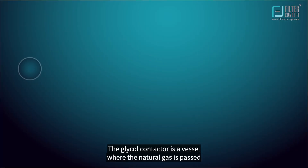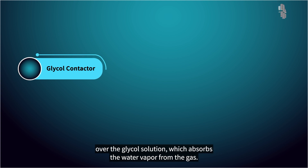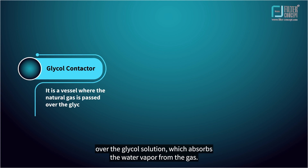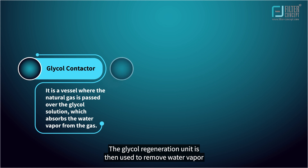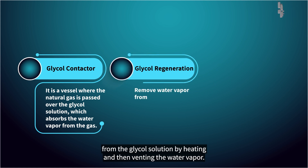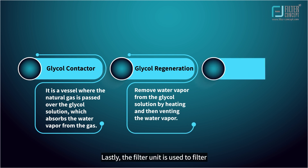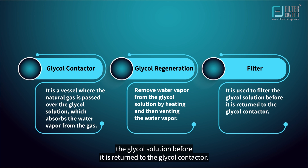The glycol contactor is a vessel where the natural gas is passed over the glycol solution, which absorbs the water vapor from the gas. The glycol regeneration unit is then used to remove water vapor from the glycol solution by heating and then venting the water vapor. Lastly, the filter unit is used to filter the glycol solution before it is returned to the glycol contactor.